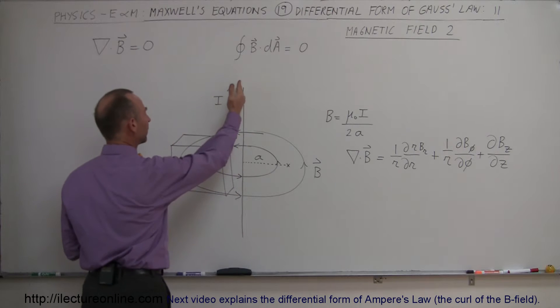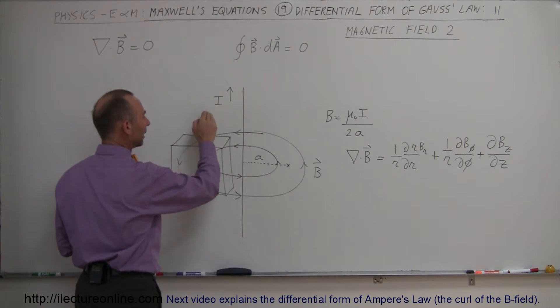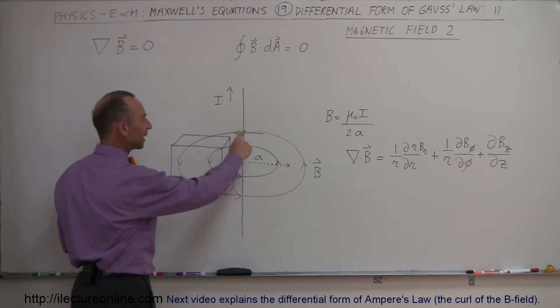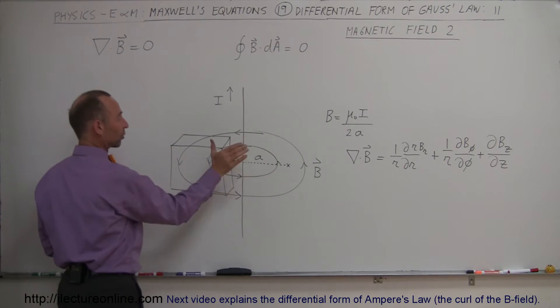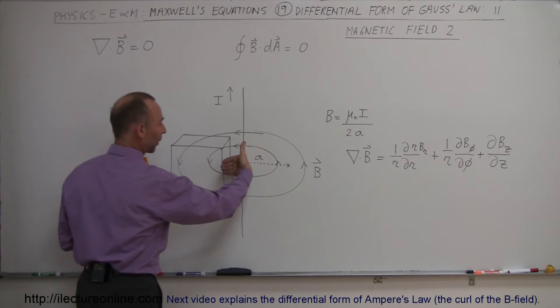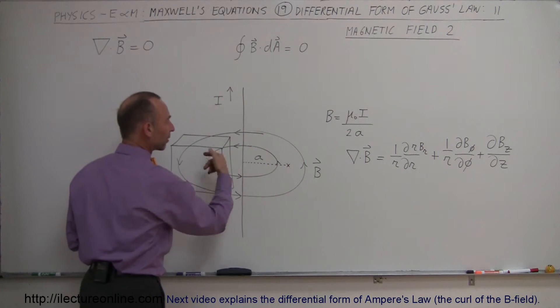So let's say we have a wire right here that carries a current I and therefore there will be a magnetic field that exists around the wire. Using a right-hand rule we can imagine our thumb is in the direction of the current and our fingers will curl around the thumb in the direction of the magnetic field.